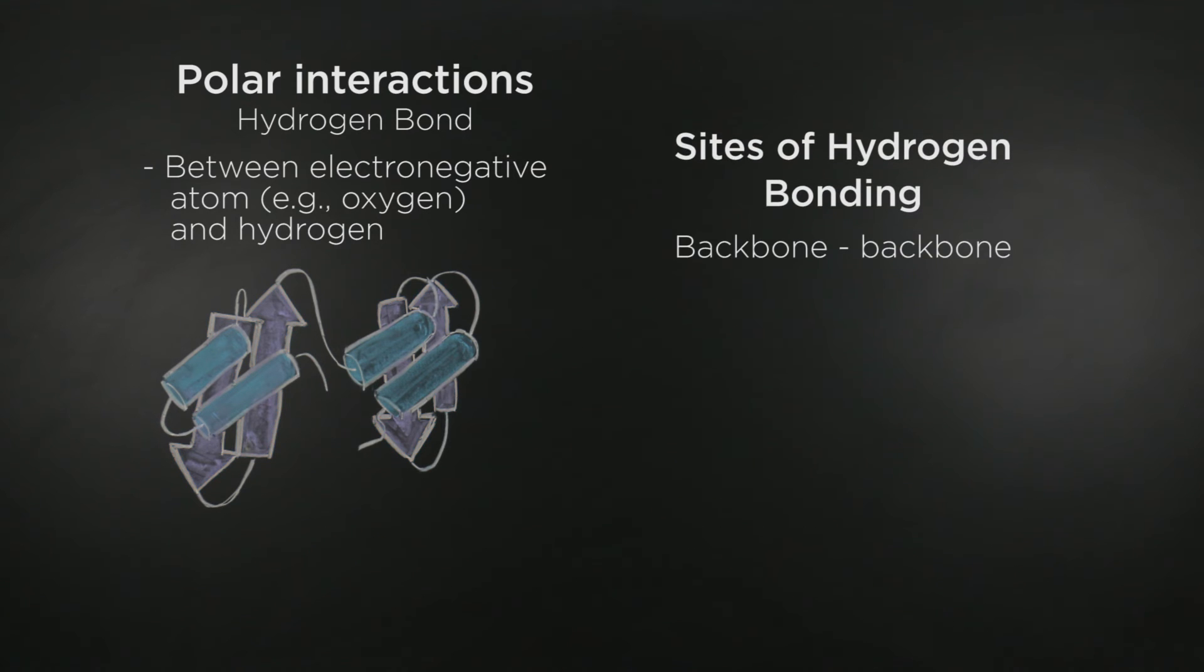Other than the backbone groups, where else can you predict the formation of hydrogen bonds in polypeptides? Correct. Side chains of polar amino acyl residues can also participate in hydrogen bonding.